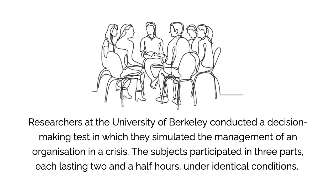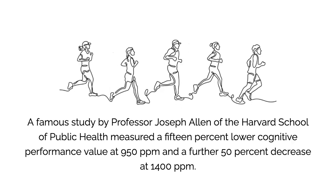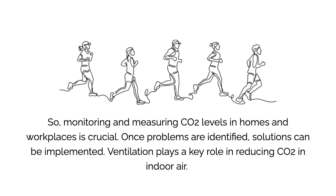Researchers at the University of Berkeley conducted a decision-making test in which they simulated the management of an organisation in a crisis. Subjects participated in three parts, each lasting two and a half hours, under identical conditions. However, the CO2 concentrations varied. An increase in CO2 concentration of 400 ppm could decrease complex strategic thinking. A famous study by Professor Joseph Allen of the Harvard School of Public Health measured a 15% lower cognitive performance value at 950 ppm, and a further 50% decrease at 1,400 ppm.